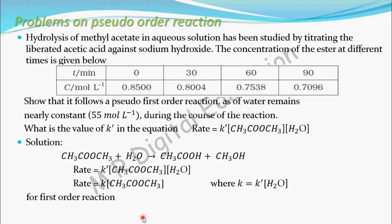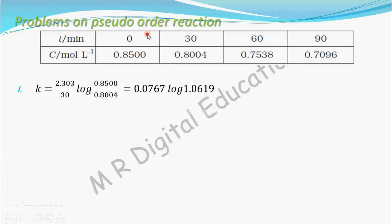For a first order reaction, k = 2.303 / t × log(initial concentration / concentration at time t). Now we calculate the value of k by taking different pairs of values from the table. Taking the first pair — at the beginning, concentration is 0.8500, and after 30 minutes concentration is 0.8004.